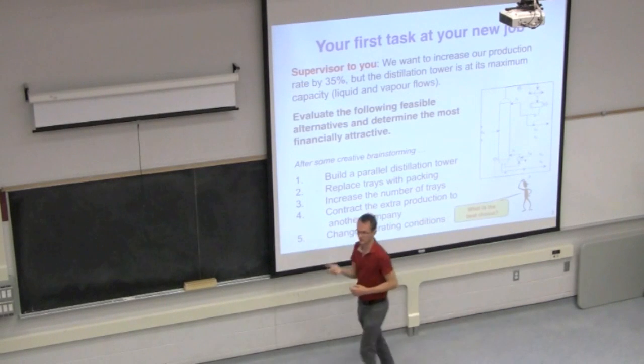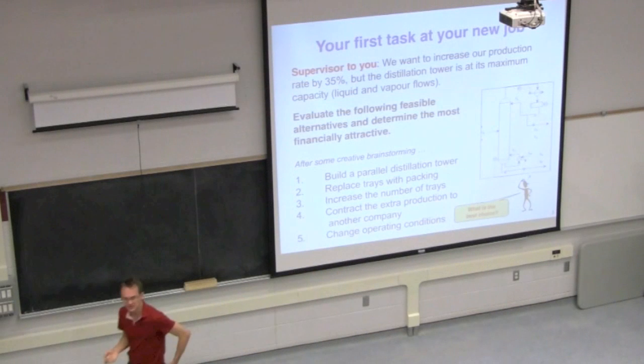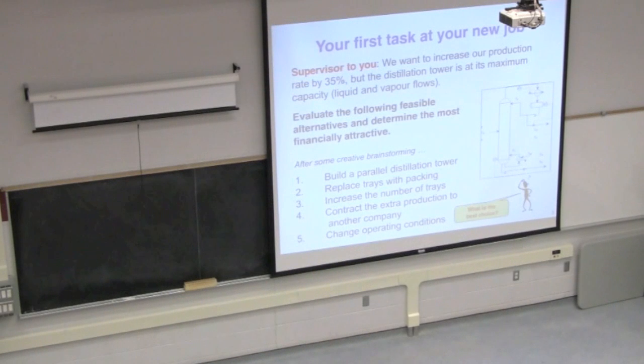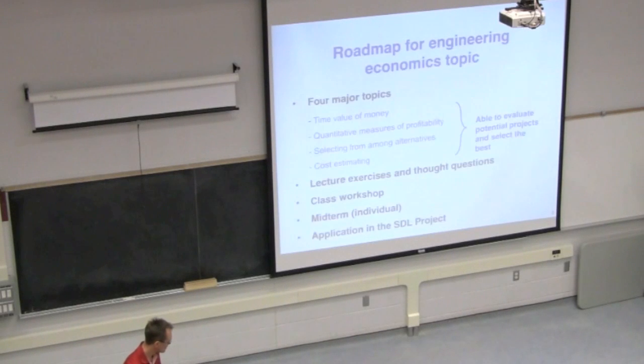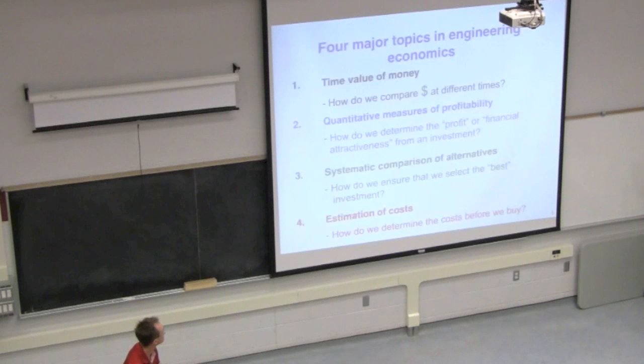Each of those options here are going to involve some form of capital cost and some form of operating cost on an ongoing basis. So here we've got five decisions. Which one do we make? Which one is going to cost us the least amount of money to implement and get us our desired increased production? This is where we're heading over the next three weeks or so to be able to make these decisions.